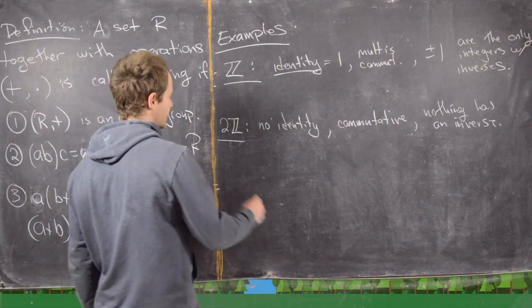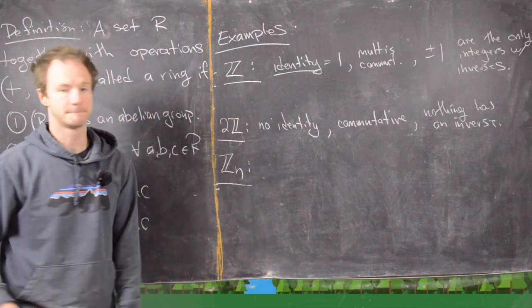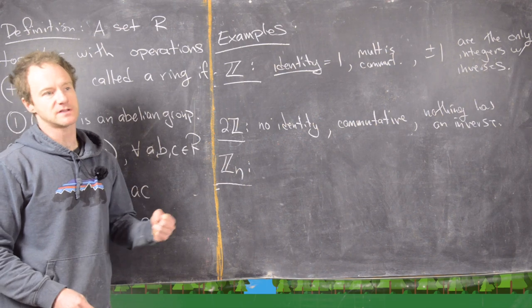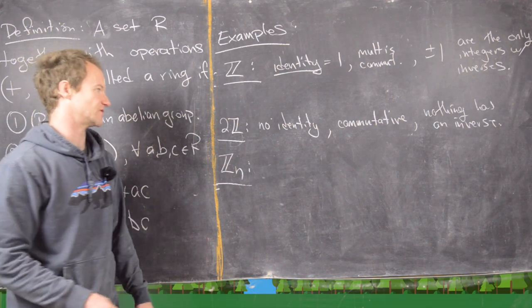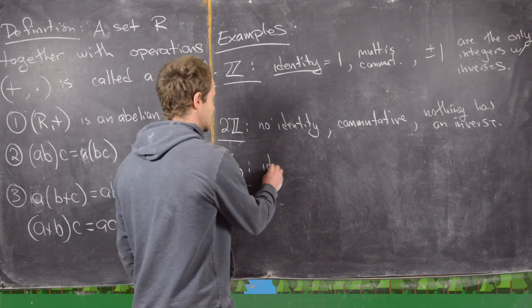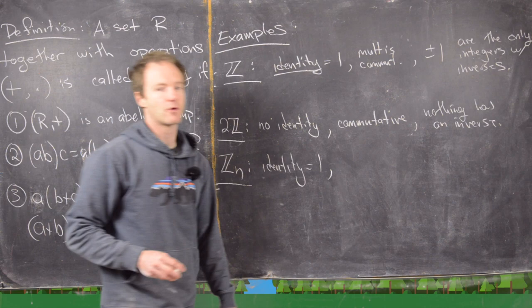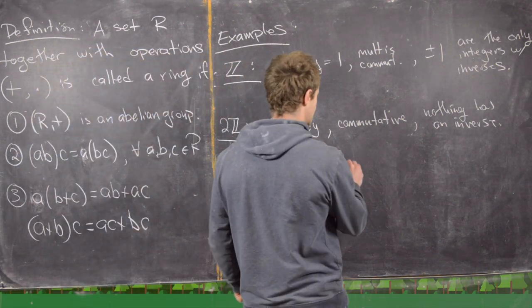So now let's look at another thing. Let's maybe look at Zn. So in other words we have the integers modulo n. We have multiplication modulo n and addition modulo n. So we do have an identity in this case. And that is the equivalence class of 1 mod n. So again, we do have commutativity.